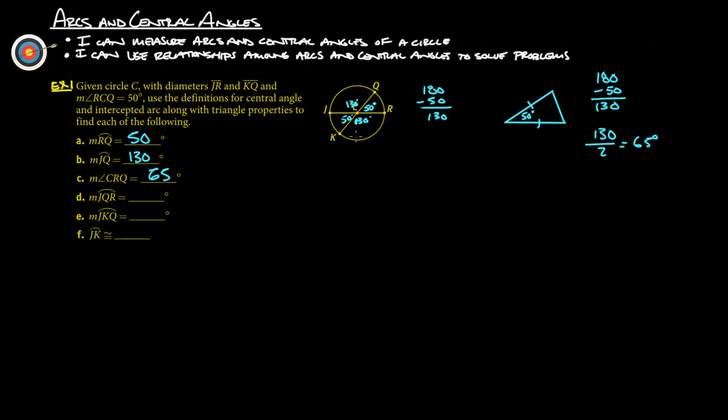Measure of arc J to Q to R is 180 degrees, because that's a semicircle. J, K, Q. J to K all the way back around to Q is all of these, so 50 and 50. So that would be 50 plus 50 plus 130 is going to give us 230 degrees. And then arc JK is 50 degrees.